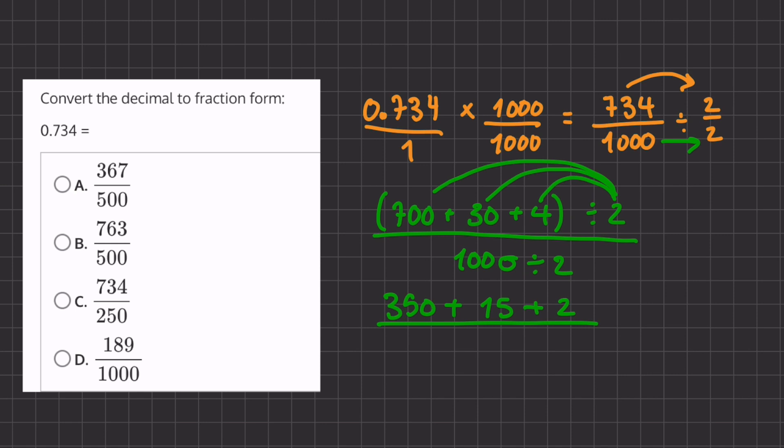So that will be our numerator and our denominator will be 1000 divided by 2, which is going to be 500. Now let's add up all of our numbers in the numerator. 350 plus 15 will give us 365 plus 2, all over 500. And we'll add again our numerator.